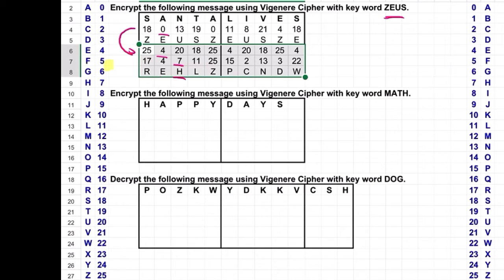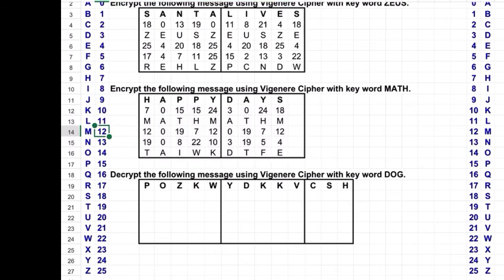Now what I'd like you to do is pause the video and try to encrypt the message 'happy days' using the keyword math. Okay, so if you had encrypted correctly with the keyword math, you do MATH MATH and then M, and here would be the encrypted message. You can pause and check your answer, and then we're going to go through one decryption.